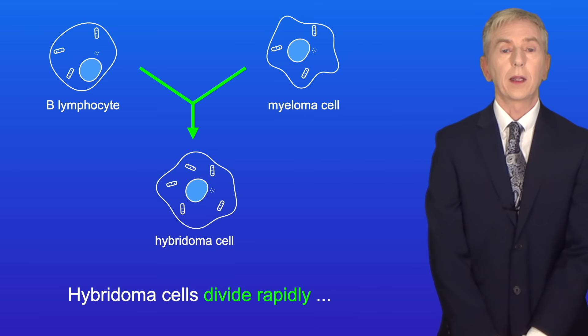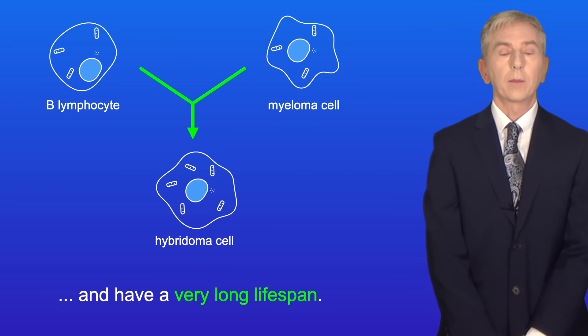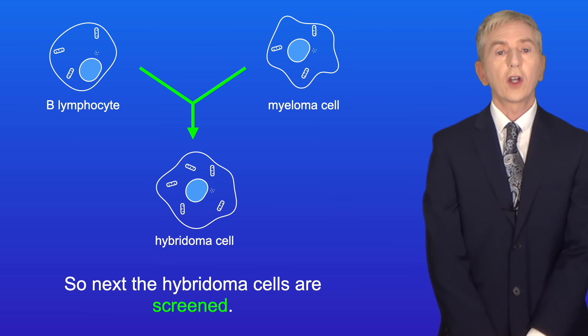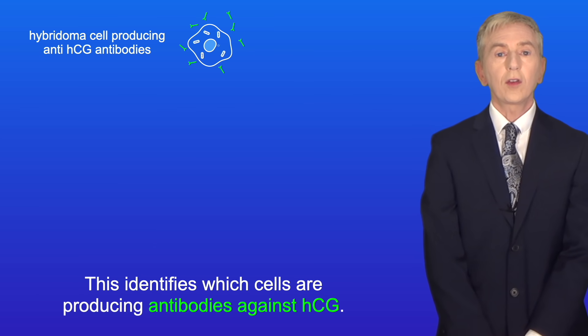Hybridoma cells divide rapidly and have a very long lifespan. Now only some of these hybridoma cells will be producing antibodies against HCG. So next the hybridoma cells are screened. This identifies which cells are producing antibodies against HCG.